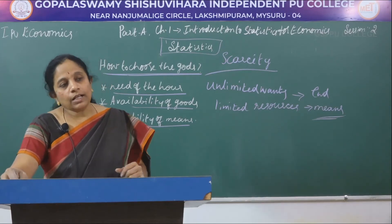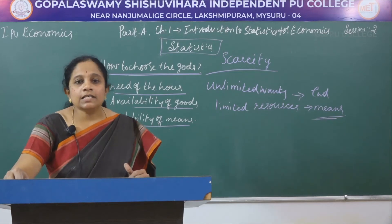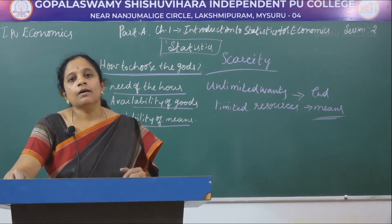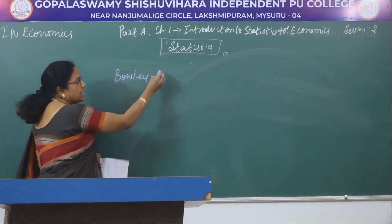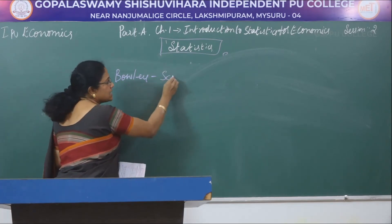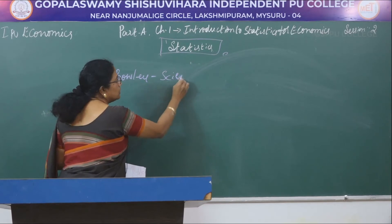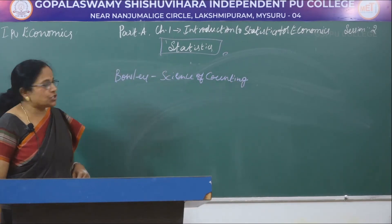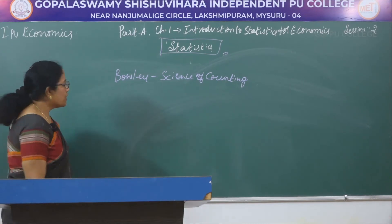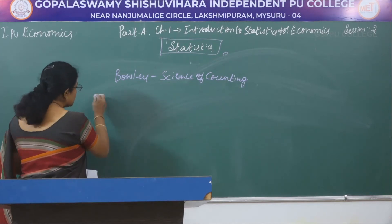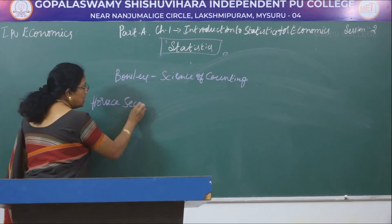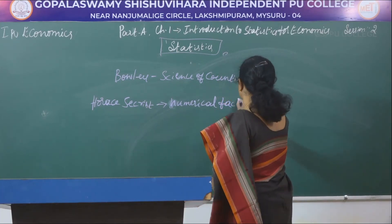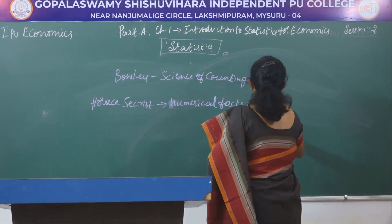Let us see the definitions of statistics. Statistics has been given two types of definitions. The first is in the singular sense and the second is in the plural sense. In the singular sense, Baule, an English statistician, defined statistics as the science of counting. When we come to the plural sense, Horace Sechrist, an American statistician, expressed the definition of statistics as numerical facts that are systematically arranged.